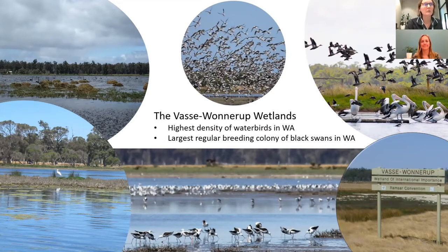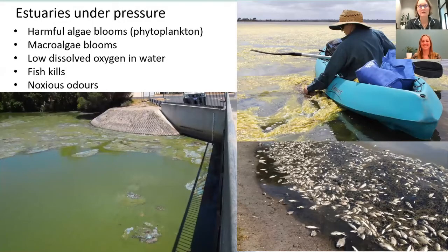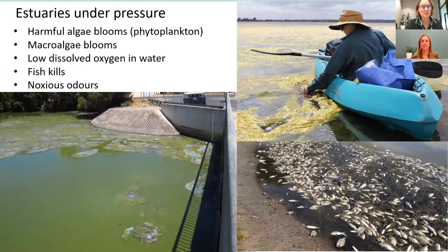On a more local note, they also support the largest breeding colony of our state emblem, the black swans. So they are highly valued, really beautiful wetlands, but just like other estuaries around the world, they really do show symptoms of suffering under the pressure of a growing human population.